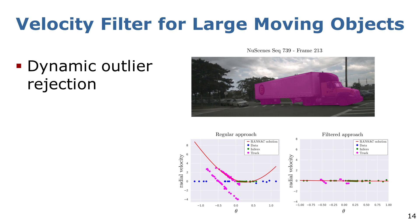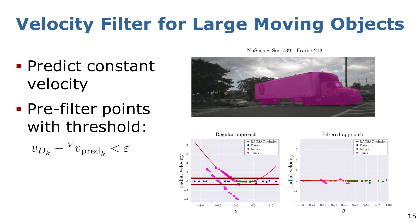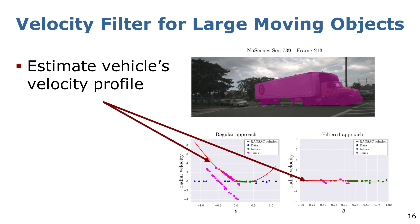Additionally, we proposed a velocity-based filter for large moving objects for radar egomotion estimation. Our approach is based on prefiltering the measured radar points using the constant velocity motion model. We then estimate the vehicle's velocity profile only using the static points from the environment. Our method shows an improvement in NuScenes sequences where the radar is being blocked by large moving objects, such as buses and trucks.